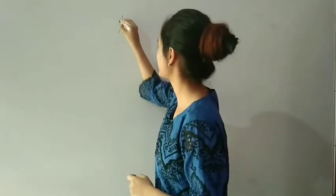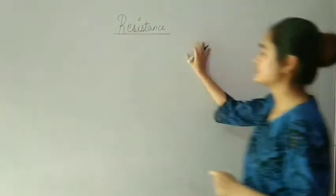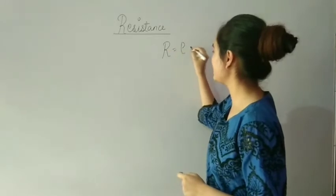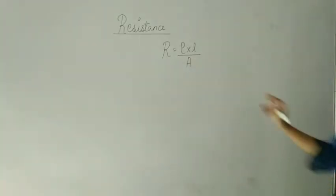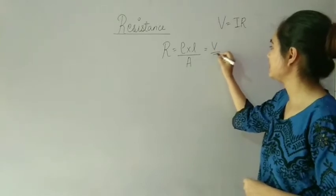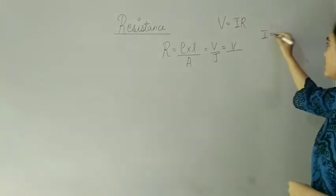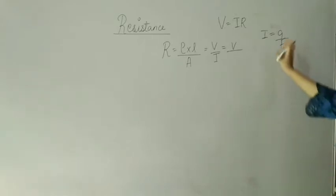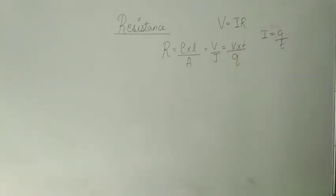Today we are going to do questions related to resistance. Using the formula Q upon T, here is a question: a 50 ohm electric heater can take a maximum current of 1.1 ampere.